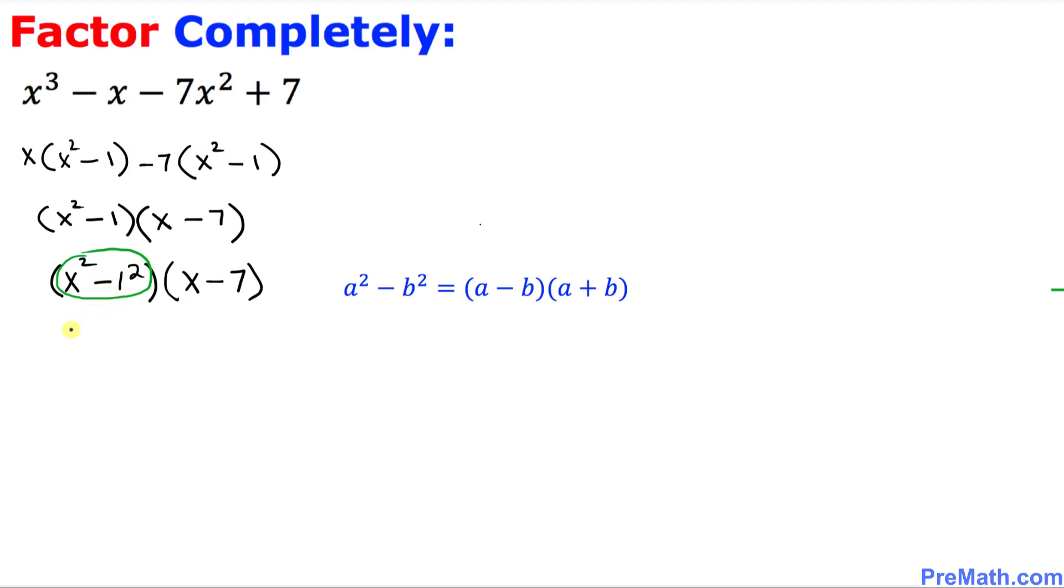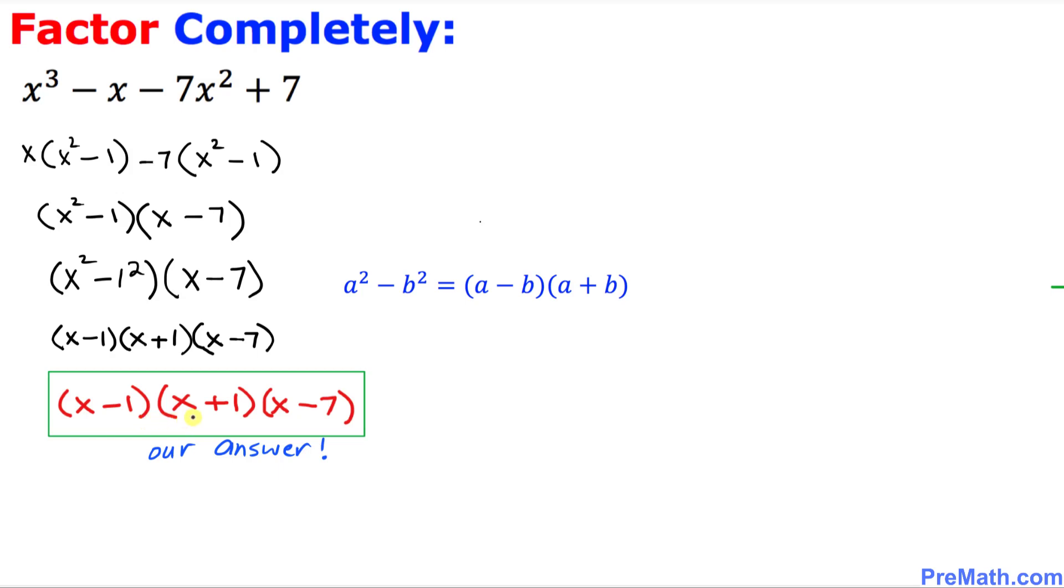So that means this parenthesis could be written as x minus 1 times x plus 1. So once again, this whole thing has been broken down into this part. And we still have this x minus 7 over here. I am going to put down x minus 7. And thus these are our complete factors. That is our final answer.